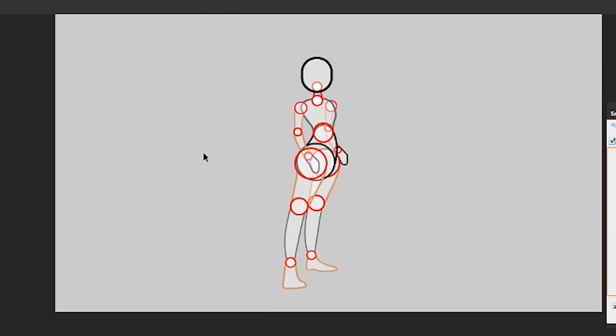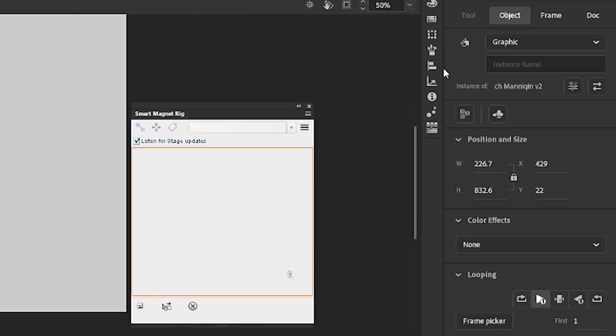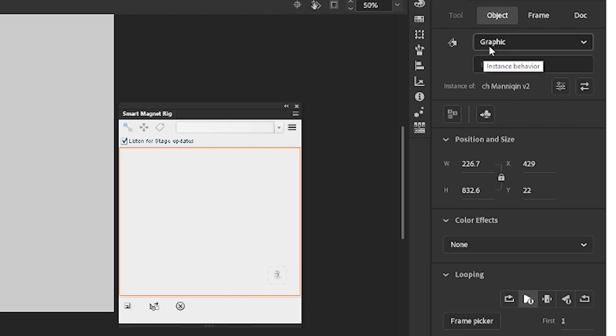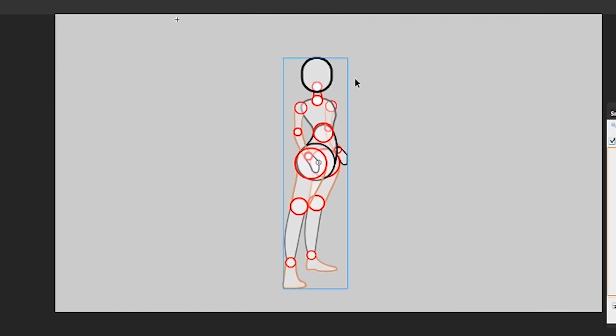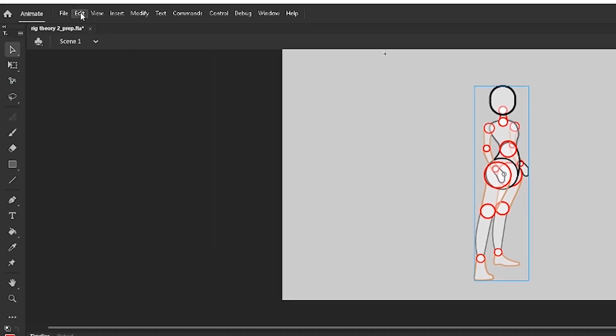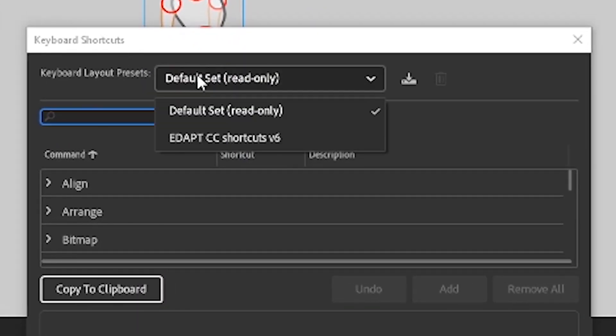Getting started with the rigging of course means having the plugin already installed. One of the next most important things to do is to set up the keyboard shortcuts, and you can access the keyboard shortcut from the preferences menu.